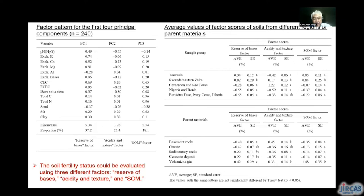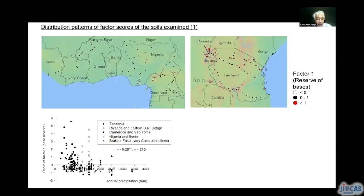In each of the countries' parent materials categories, the distribution patterns of the factor scores were clear. For example, the soils in eastern Africa were high in base reserve, or the soils with volcanic origin accumulated exceptionally high organic matter. The upper figures show the distribution pattern of factor scores scattered on the maps. The black closed circle has a factor score less than zero, indicating relatively low in that property; the open circle between zero and one is relatively high; and the red closed circle exceeding one is definitively high.